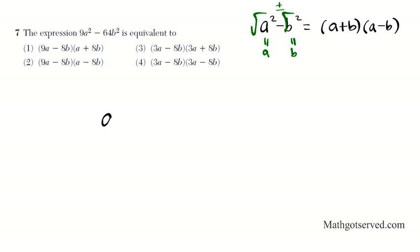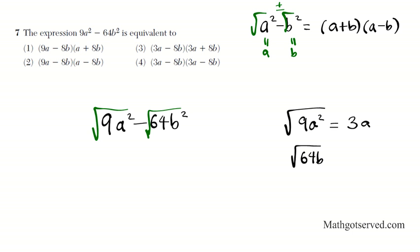Let's take a look at this: 9a squared minus 64b squared. If I square root the first term, what does that yield? The square root of 9a squared - the square root of 9 is 3, and the square root of a squared is just a, so it's 3a. And the square root of 64b squared - the square root of 64 is 8, and the square root of b squared is just b.